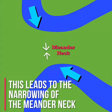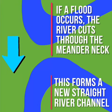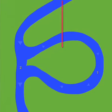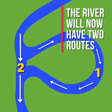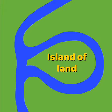This leads to a narrowing of the meander neck. If a flood occurs, the river may cut through the meander neck to form a new straight river channel. The river will now have two routes — water will continue to flow around the old meander and also follow the new straight river channel.